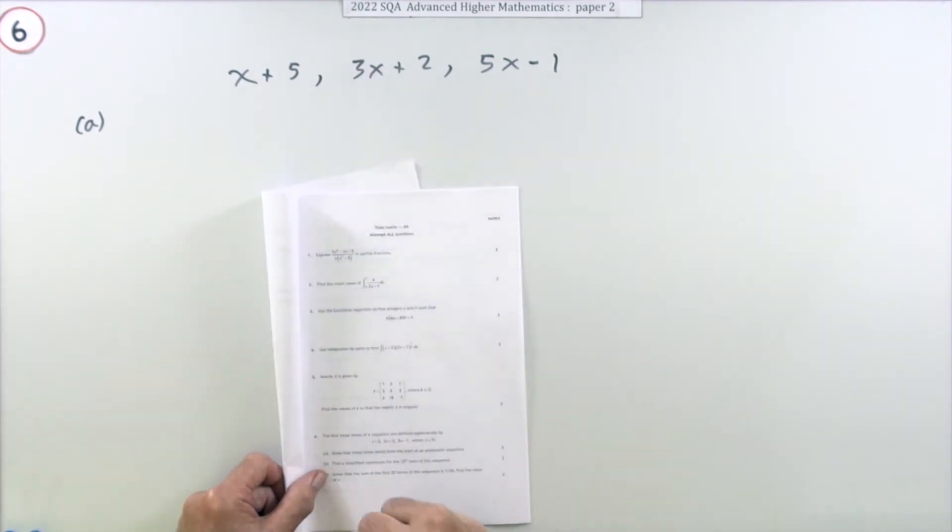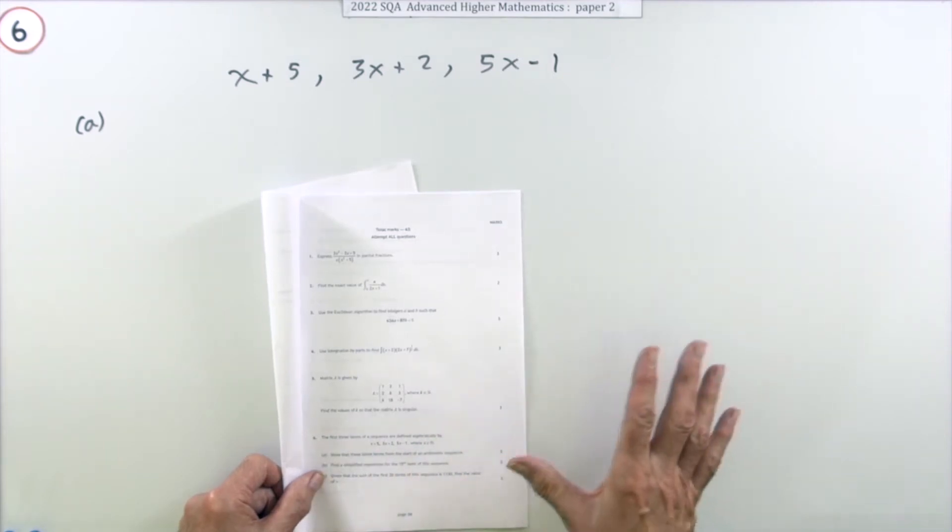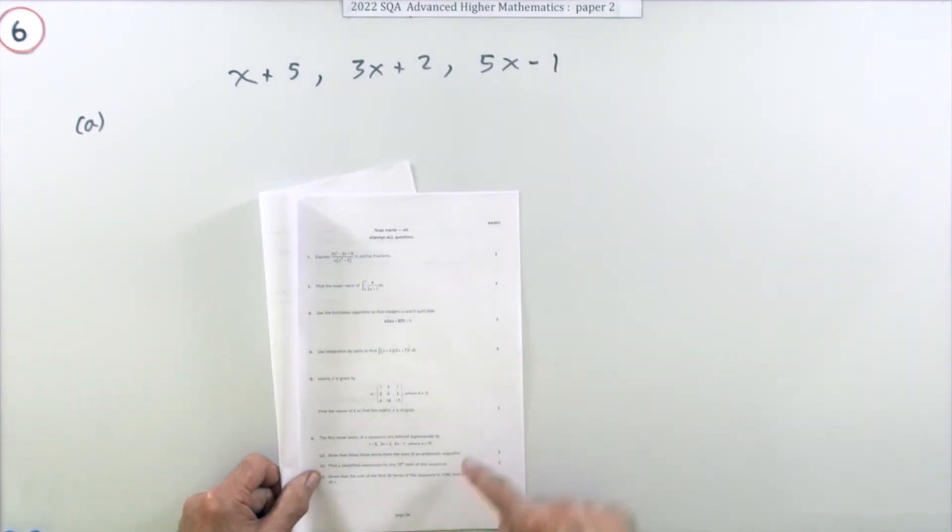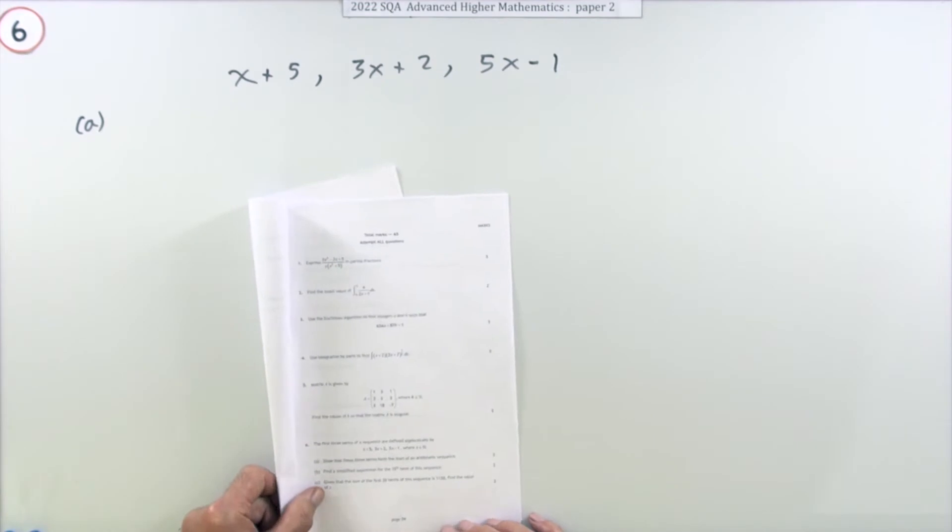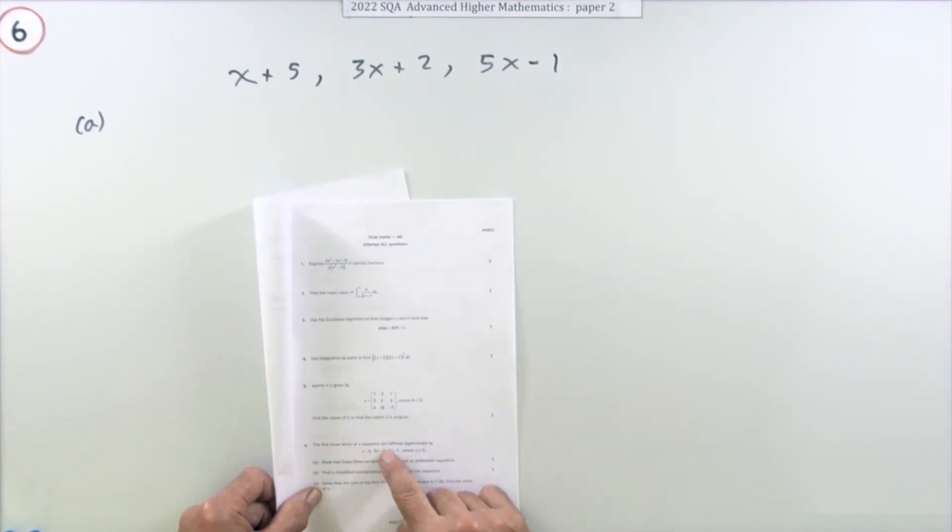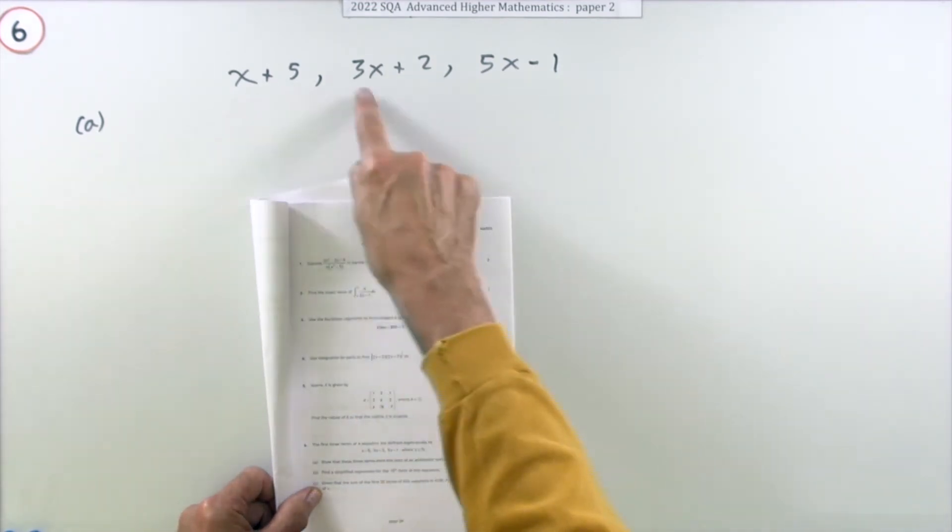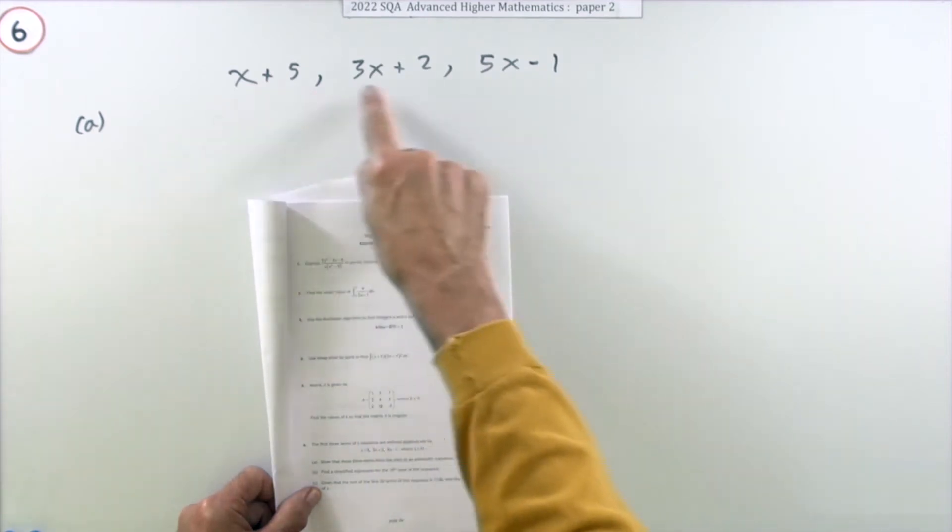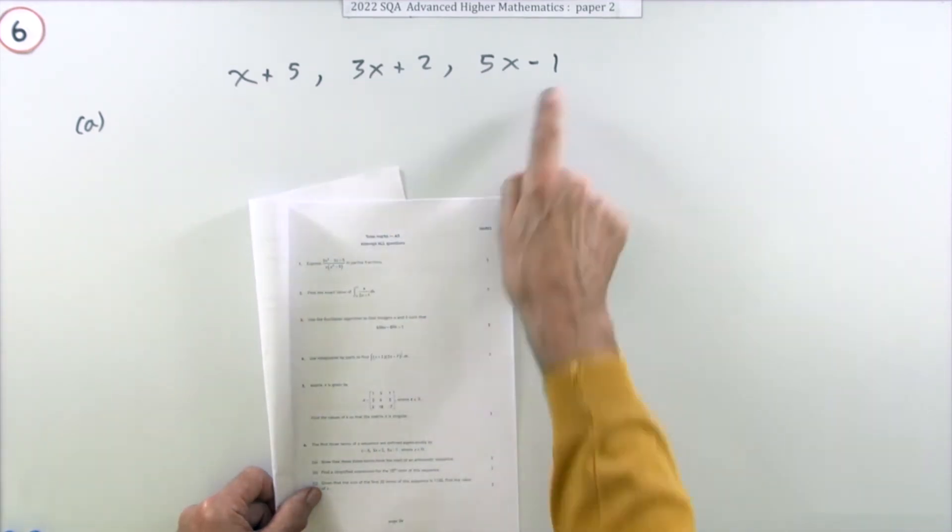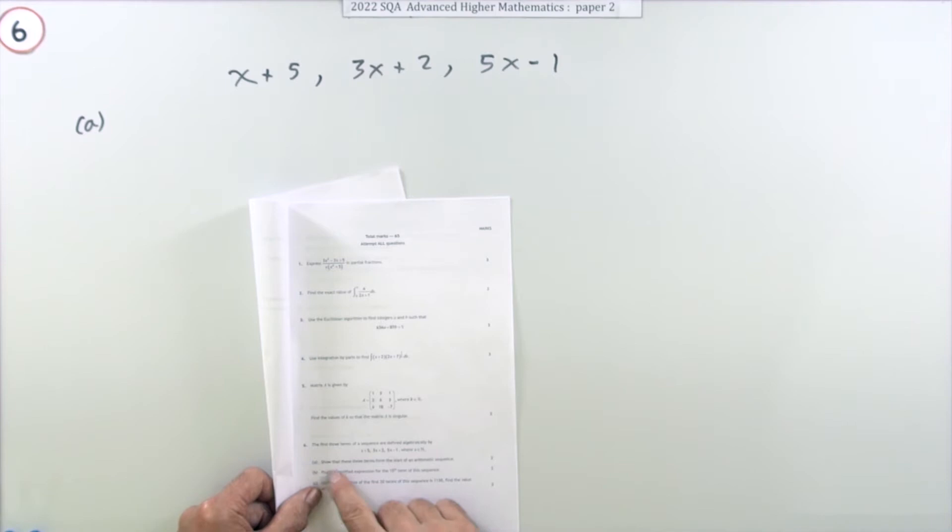Question 6 from the 2022 Advanced Higher paper 2, six marks. This is on series and sequences - those can be real horrors sometimes. This looks quite straightforward because it's just an arithmetic sequence. The first three terms of a sequence are defined algebraically by these three terms where those are natural numbers.